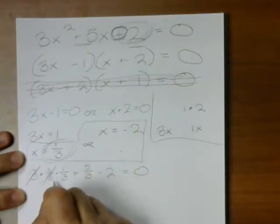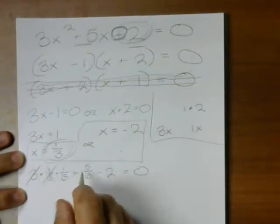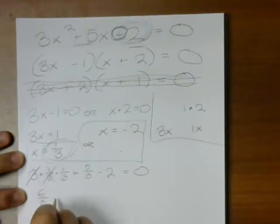And I need to check that this equals 0. Well, what happens here? Well, we cancel that out. So I have 1 third plus 5 thirds. That's 6 thirds minus 2. Does that equal 0? Sure it does, because 6 thirds is 2.